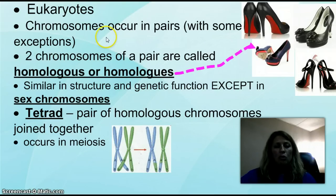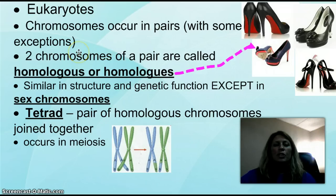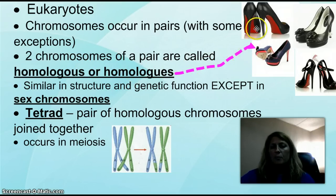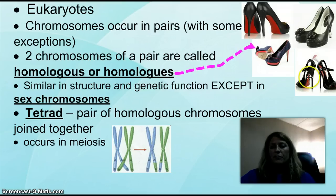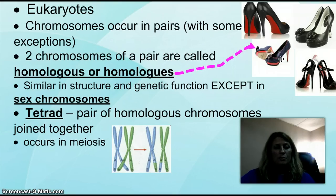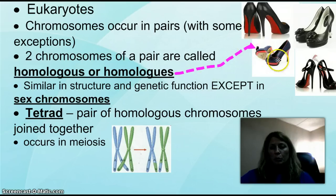In eukaryotes, chromosomes always occur in pairs because you're going to match up a chromosome from your mom and a chromosome from your dad. When we look at two chromosomes of a pair, they are called homologous chromosomes or homologues — either term is sufficient. Think of it as a pair of shoes: similar structure, similar color, but all a little bit different. They have the same structure and same function, but they are homologous chromosomes. Now there are some chromosomes — the sex chromosomes — where you may have one black heel and one blue, meaning one may be a large chromosome and one may be a small chromosome.